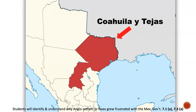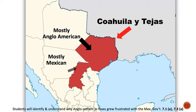Coahuila y Tejas was a state that combined those two regions. Texas was full of mostly Anglo-Americans, and Coahuila was full of mostly Mexicans whose families had been in Mexico for hundreds of years.